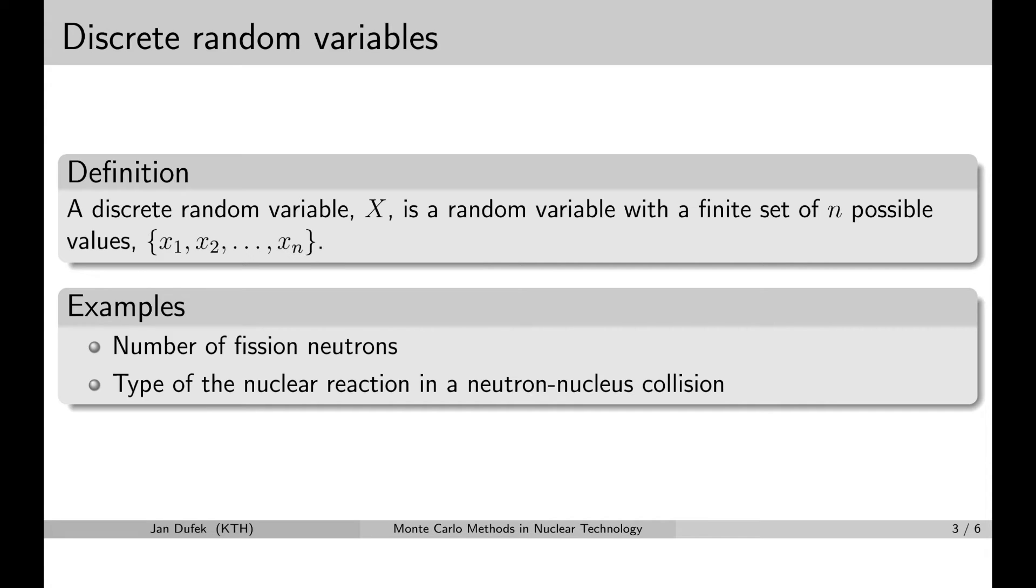Now, before the actual fission reaction happens, we cannot predict with certainty how many neutrons will be released. We know that it will be two or three and we know the probabilities with which two neutrons or three neutrons will be released.